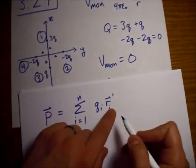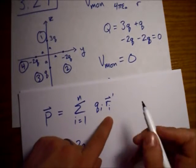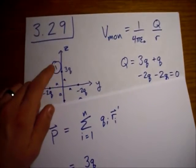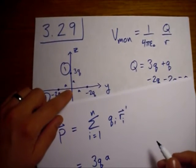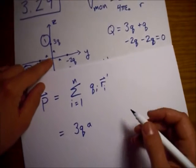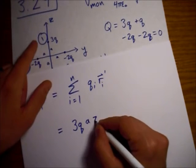So, the first one. We're looking for this r prime 1, our first one. And that just has the magnitude of a, since we're at a distance a from the origin, and the direction z hat.